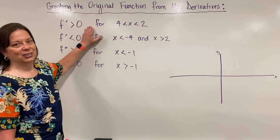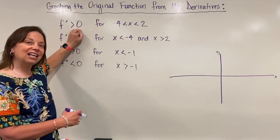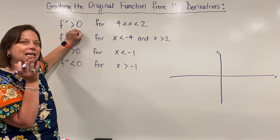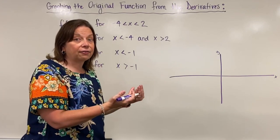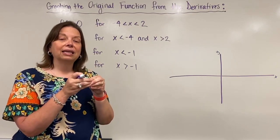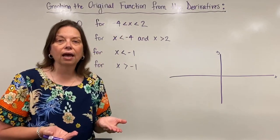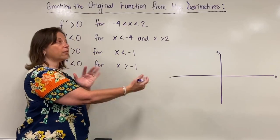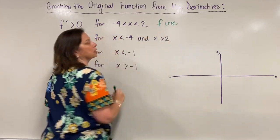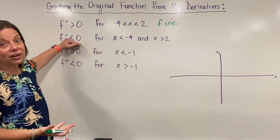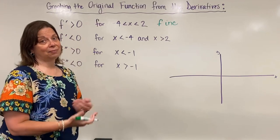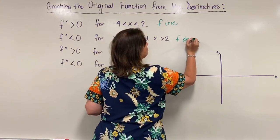First, a reminder of the connection between what the first derivative tells us about the original function. When the first derivative is positive in a zone, the original function f is increasing in that zone. So f will be increasing from negative 4 to 2. Consequently, when the derivative is negative, f is decreasing in those same areas.